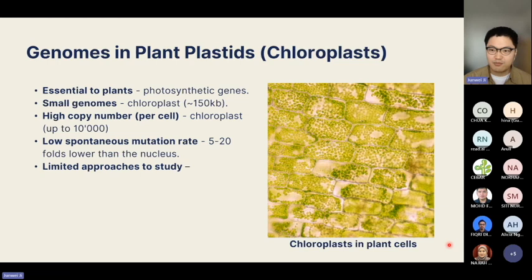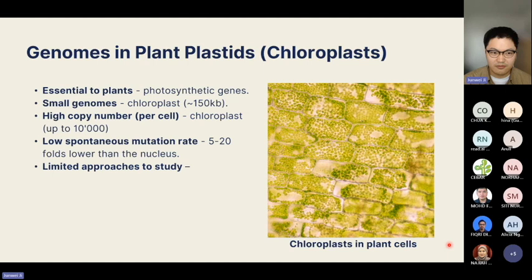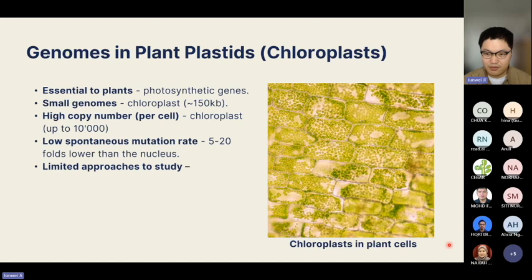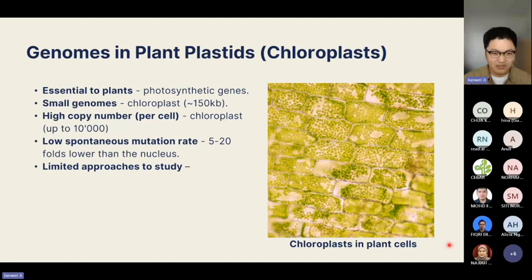Before I go into more detail, let me give a little background about plant plastids — what we call plant chloroplast genomes. These genomes are essential to plants; they contain many photosynthetic genes, RNA, and housekeeping genes, and are very small. For chloroplasts, the average across plant species is around 150 kb, compared to the nucleus which can have three gigabytes.